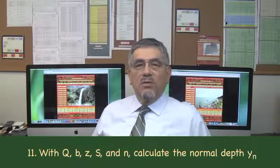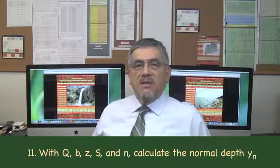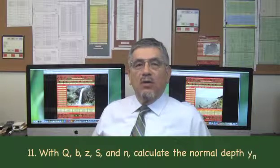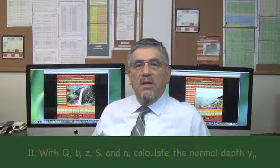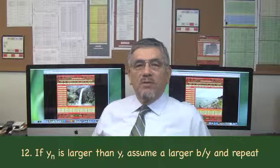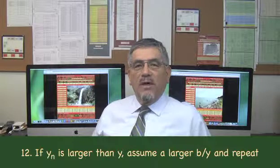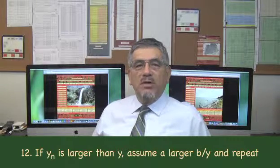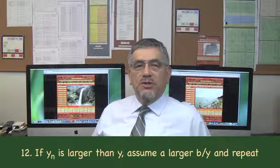Step 11: With Q, B, Z, S, and N, calculate the normal depth Y sub N. Step 12: If Y sub N is larger than Y, assume a larger B over Y and repeat the procedure.